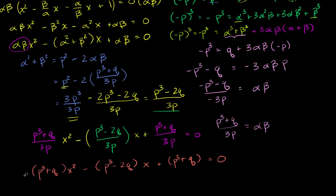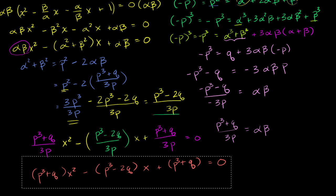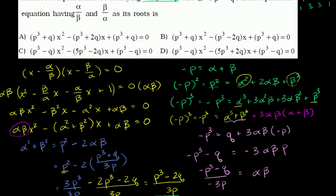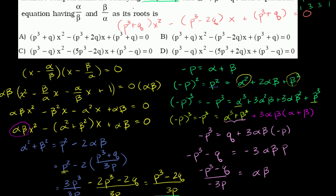Now let's see how this compares to the choices. I think I actually did not make my careless mistake in this video — I actually got the right answer. This matches answer B exactly: p cubed plus q times x squared, minus p cubed minus 2q times x, plus p cubed plus q equals 0. So that's our answer. I take back what I said at the beginning — I didn't need your help, but I guess just the process of explaining it was the help I needed. Hopefully you found that useful.